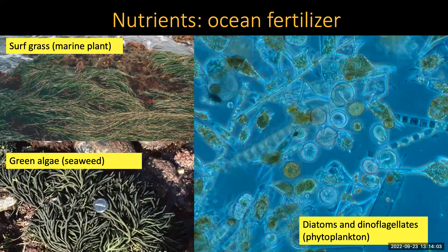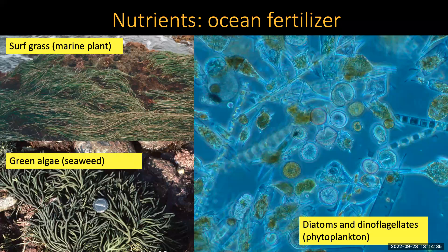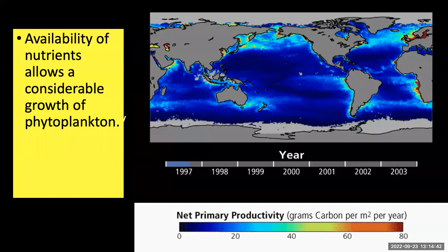In the oceans, the distribution of life depends on the availability of two things: sunlight and nutrients. Nutrients are the fertilizers of the ocean — plants and algae such as phytoplankton, seaweed, and marine plants form the base of the marine food web. Just like fertilizers are needed in your vegetable garden, they're also required by seaweed, marine plants, and phytoplankton. Areas with high availability of these nutrients will allow considerable growth of algae. We call these high productivity areas.